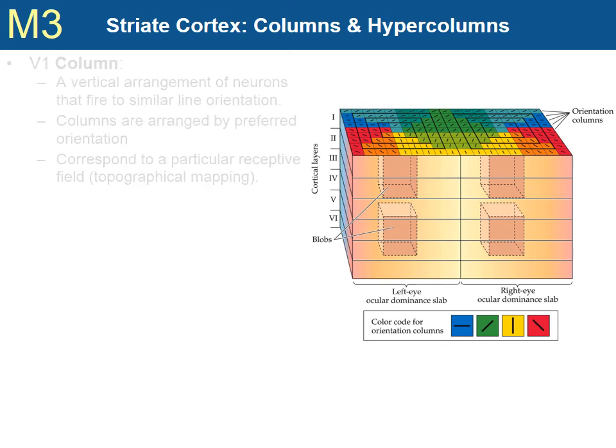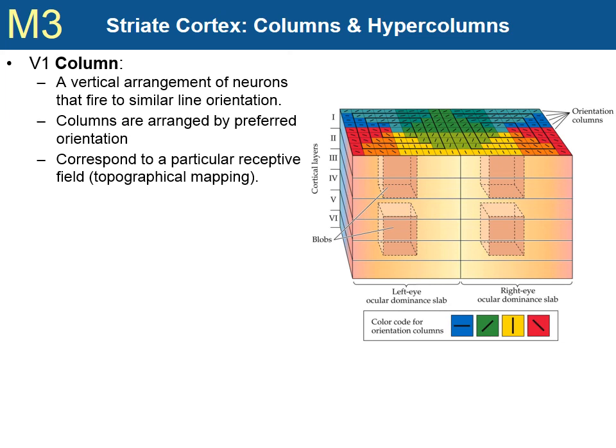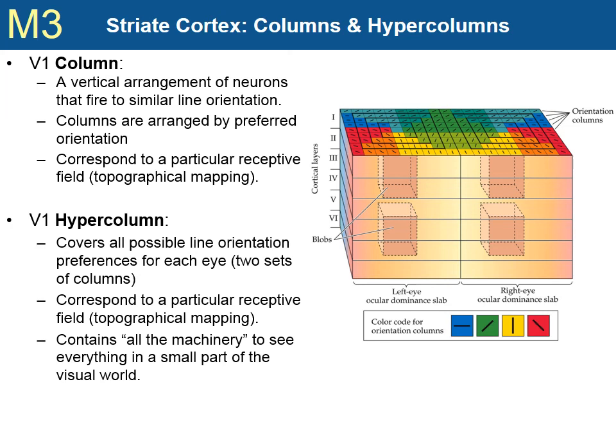Beginning with Hubel and Wiesel's work, researchers have continued to map out the organization of the striate cortex. What we now know is that the striate cortex is arranged in columns and layers. Each small colored square in the figure represents one column, and each column extends down through the cortical layers, layers 1 through 6. All of the neurons in a column respond to stimuli in the same receptive field and of the same line orientation. All of the columns that respond to the same receptive field are referred to collectively as a hypercolumn.